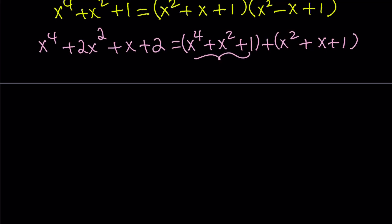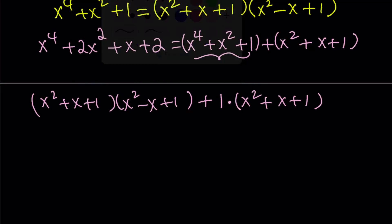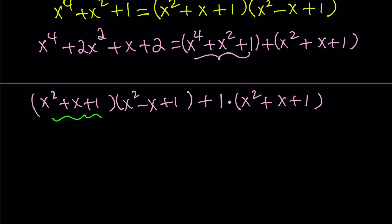So, let's go ahead and write the factors of this one first. That's going to be x squared plus x plus 1 multiply by x squared minus x plus 1. Plus, since the second one doesn't really have anything to multiply by, I can use a 1. Now, we have a common factor. Let's go ahead and use that. x squared plus x plus 1 is a common factor.